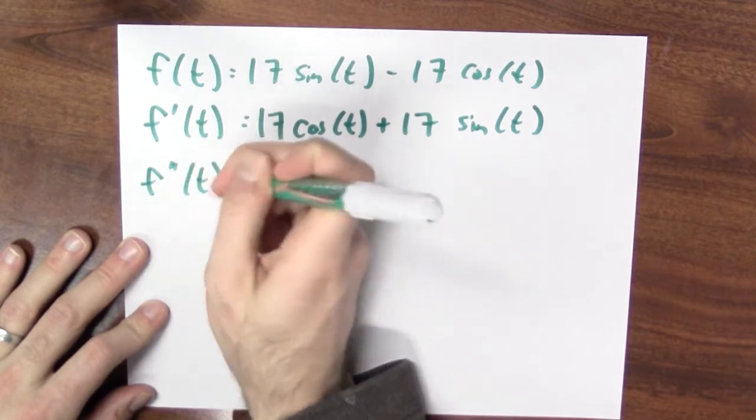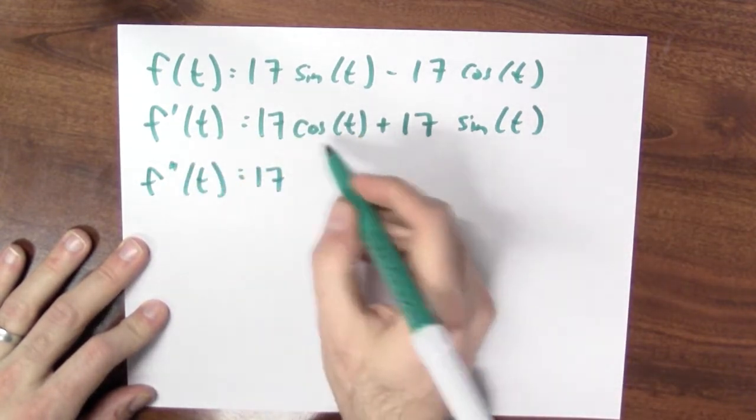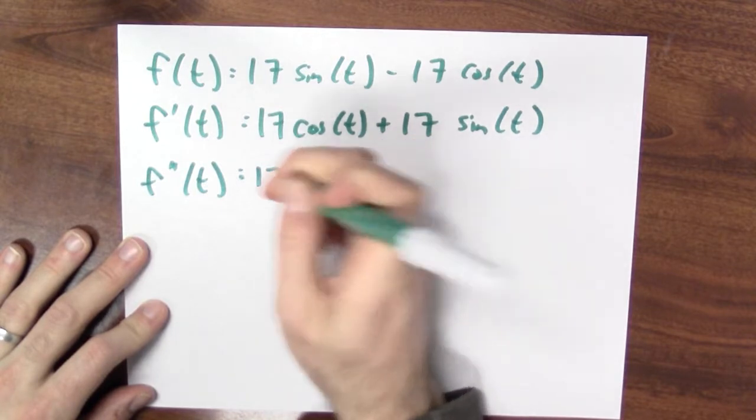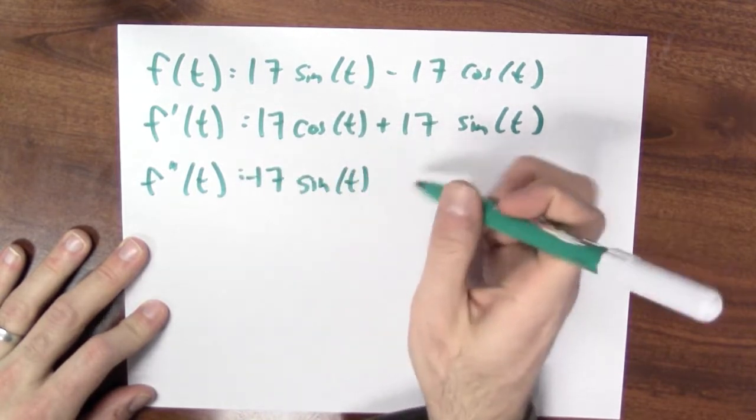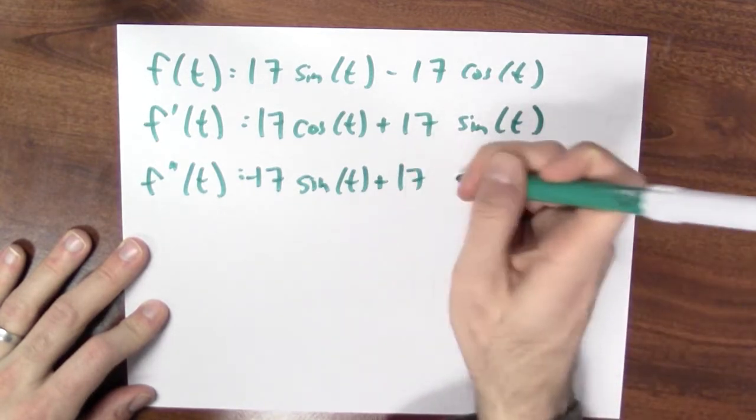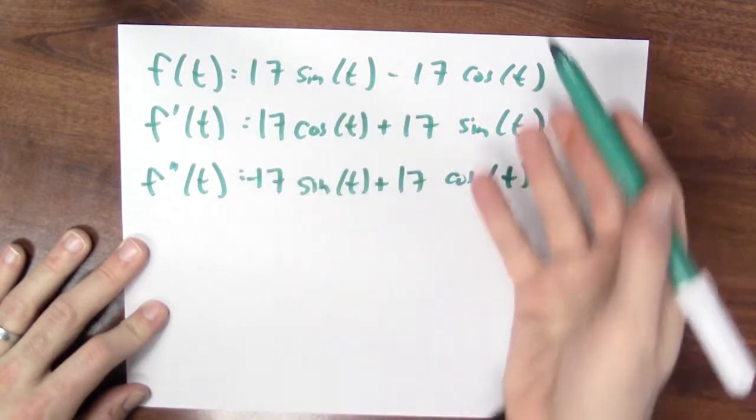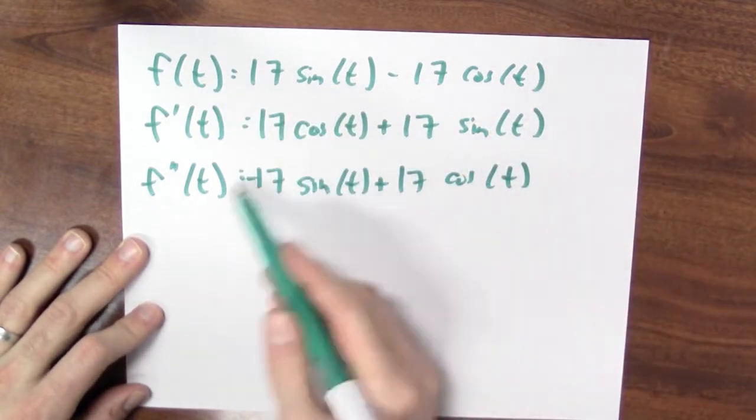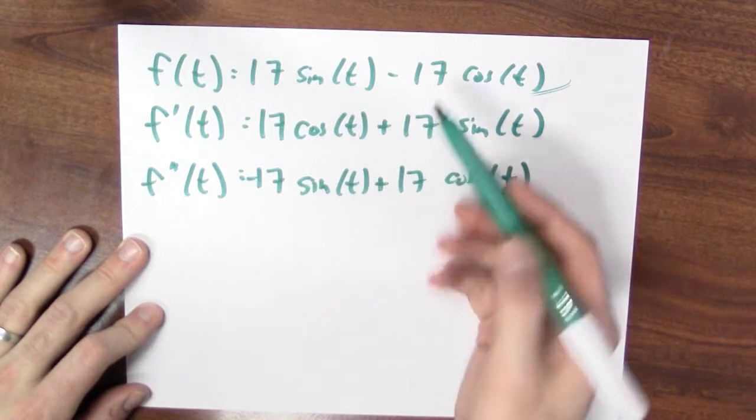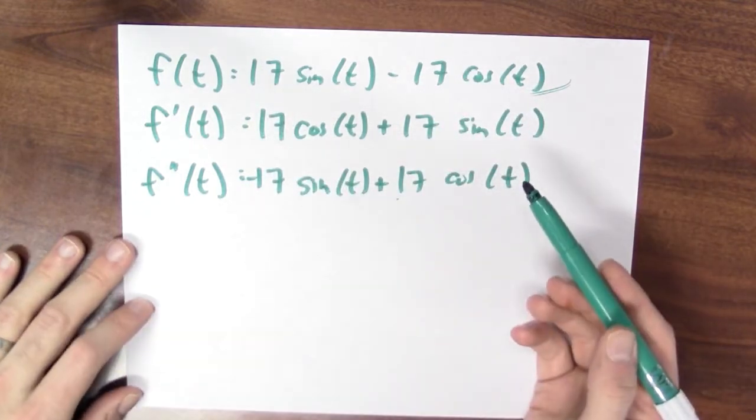The second derivative of f is the derivative of the derivative. This will be 17 times the derivative of cosine, which is minus sine, plus the derivative of sine, which is cosine. So yeah, this is another example of a function whose second derivative is negative itself. If I take this function and differentiate it twice, I get negative the original function.